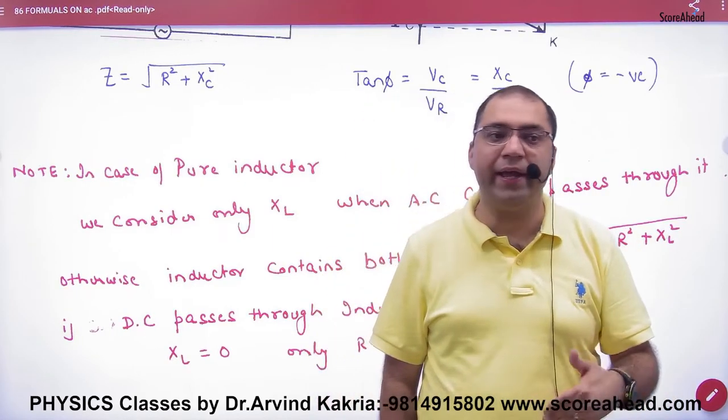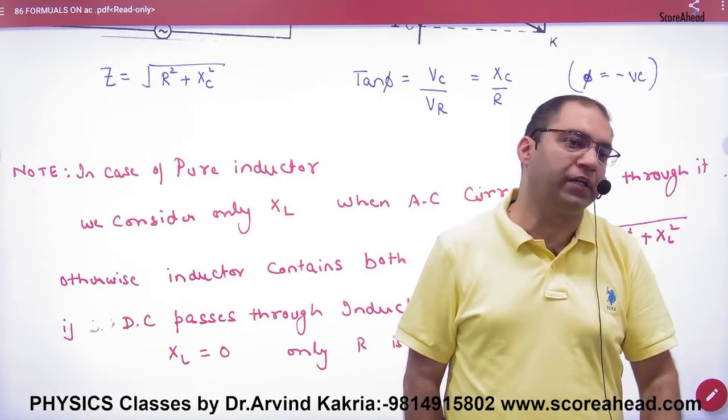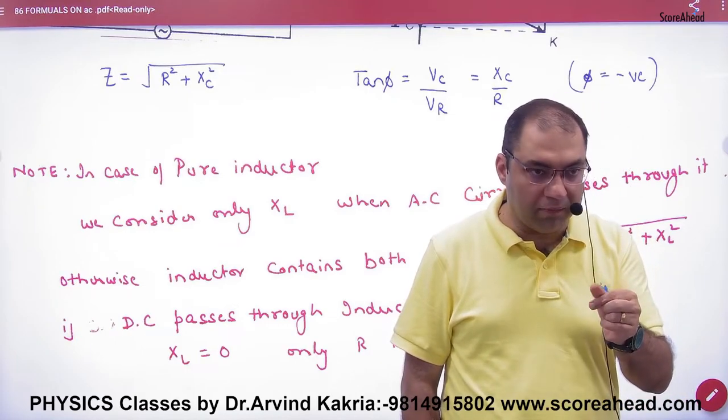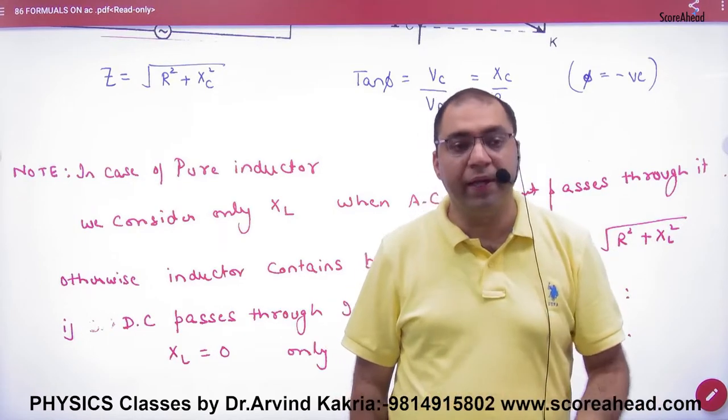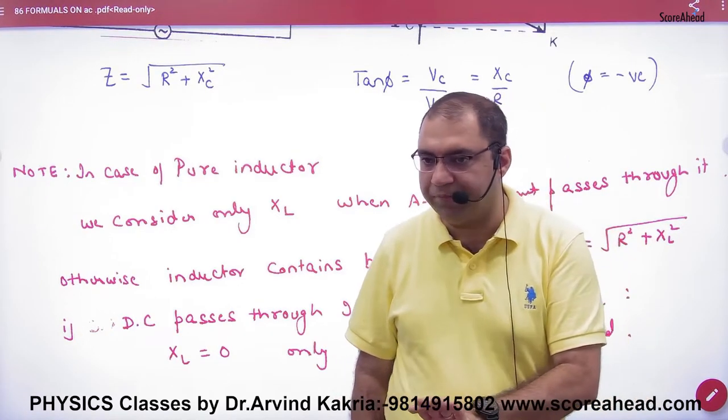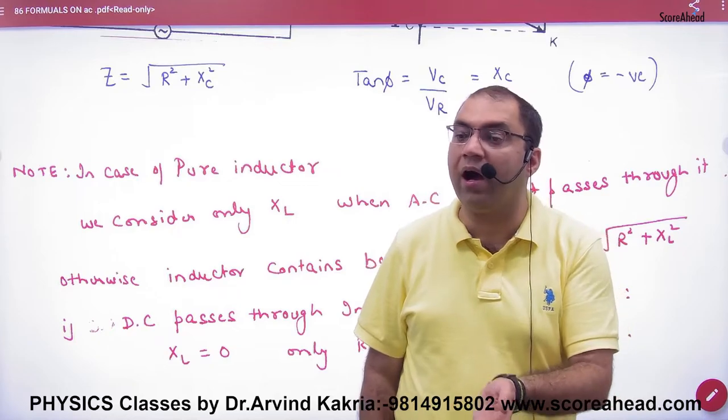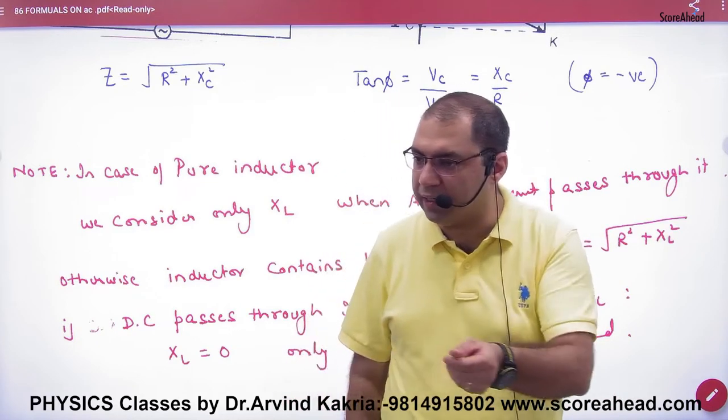When we pass the AC current, it generates the reactance. So normally an inductor offers two resistance to AC. One R, the material of the wire. R will do it and XL also does it. But if it has written a normal inductor, so the normal inductor acts like an RL circuit. A normal inductor acts like an RL circuit. RL circuit in terms of R and XL.